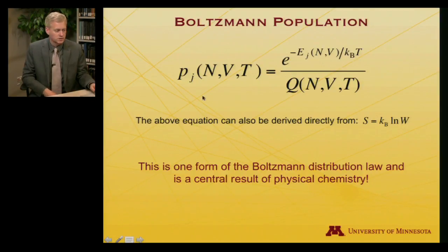This equation, which is a key equation in statistical mechanics, can actually be derived directly from S equals k log W. That was Boltzmann's famous equation. We're not going to do it that way, but just so you know, there are multiple ways to approach that particular problem, and Boltzmann approached it in the other direction as well. But this is one form of the so-called Boltzmann distribution law. It's a central result of physical chemistry and enormously useful for telling us what energy states we should expect to see populated in a system that is held at certain fixed values, in this case, N, V, and T.